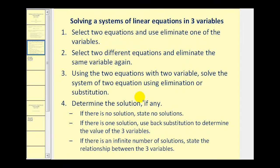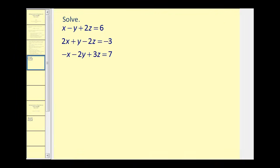From this, we'll be able to identify the type of solution we have. If there's no solution, we'll state no solutions. If there is one solution, we'll use back substitution to determine the values of the three variables. If there's an infinite number of solutions, we'll state the relationship between the three variables. In the example, I'll label each equation with a letter: equation A, equation B, and equation C.